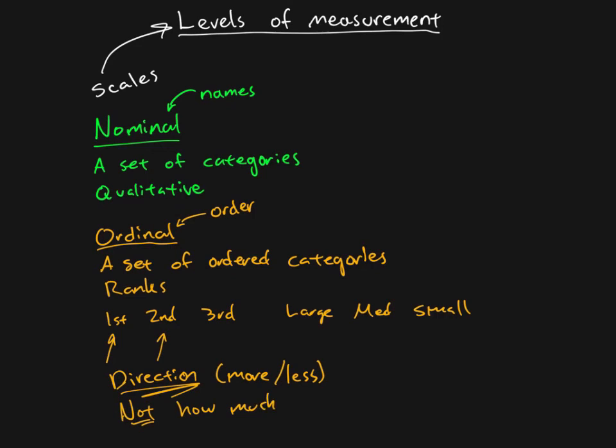So for example, if we go back to our idea of having runners that finished in first, second, and third place, we know that the person who finished in first place was faster than the one in second place, but he could have been two milliseconds faster or five years faster. There's no information there other than saying this person had more of something, but we don't know how much more.